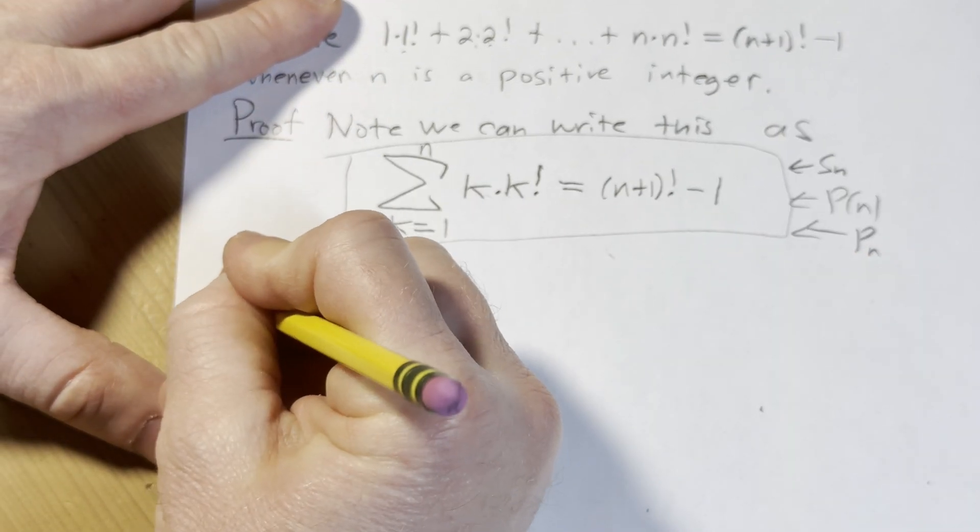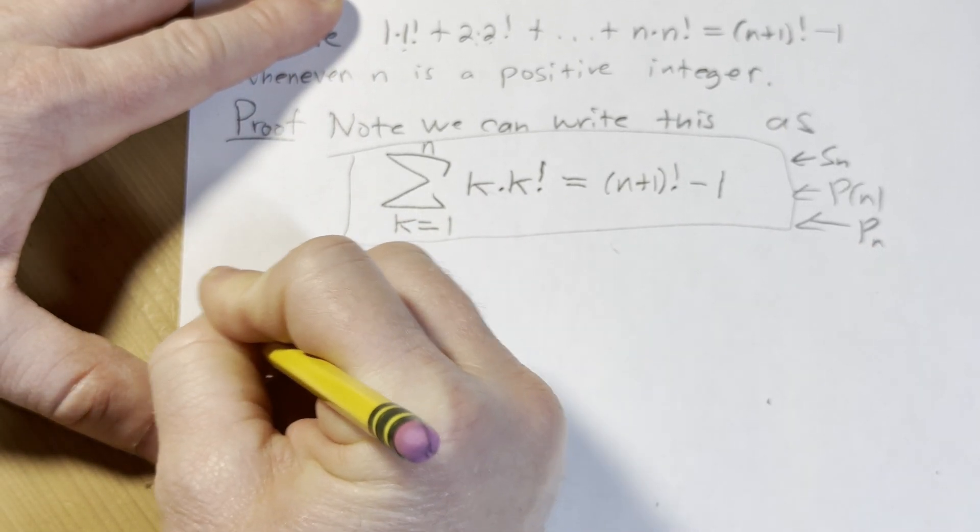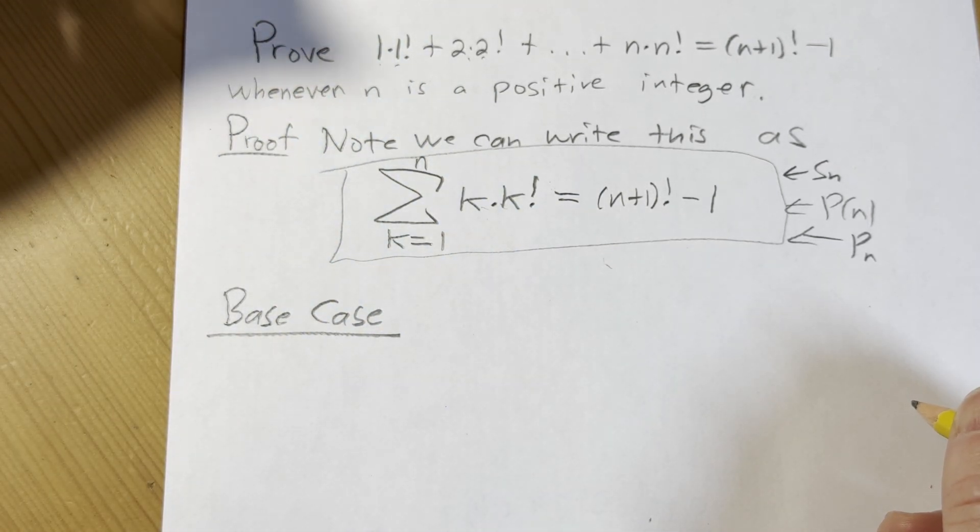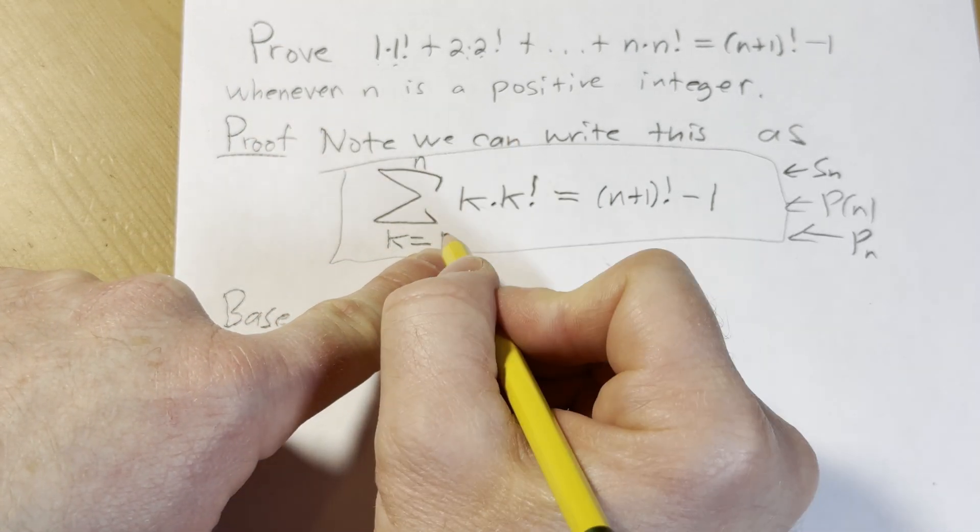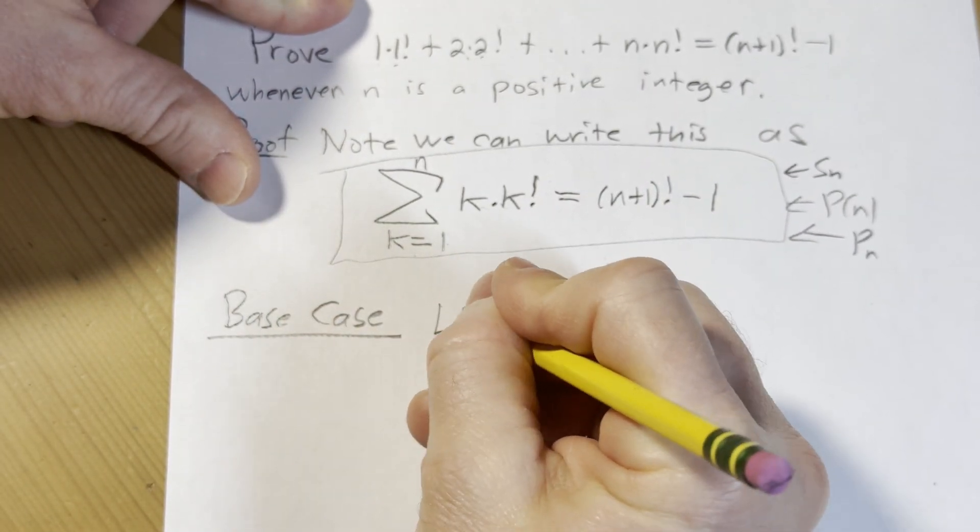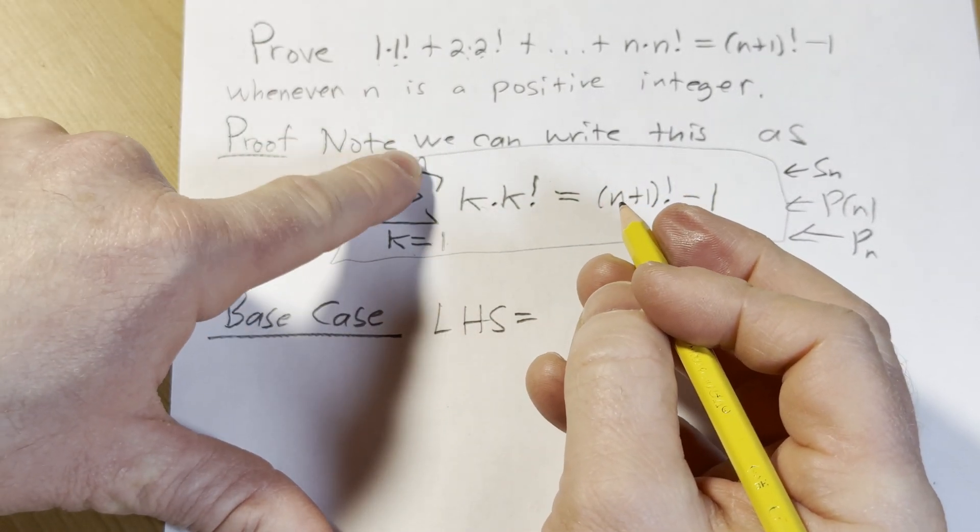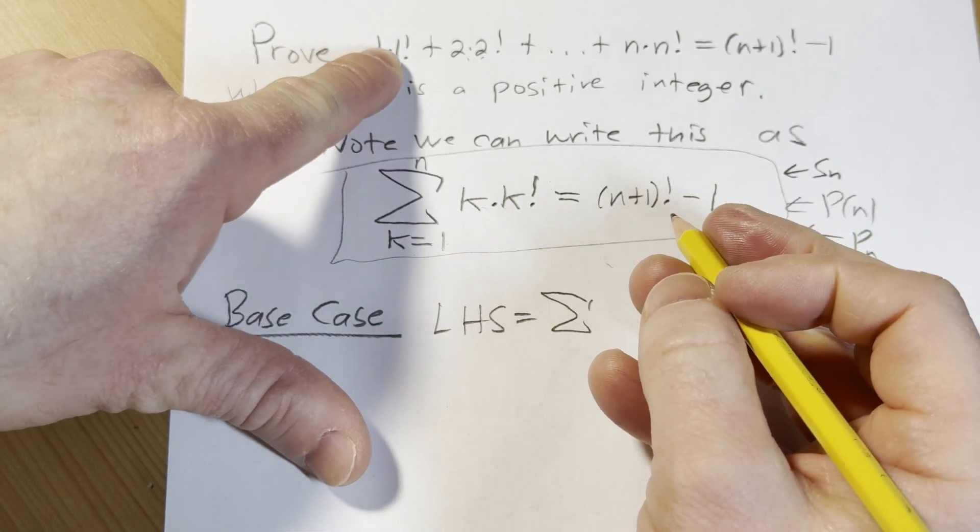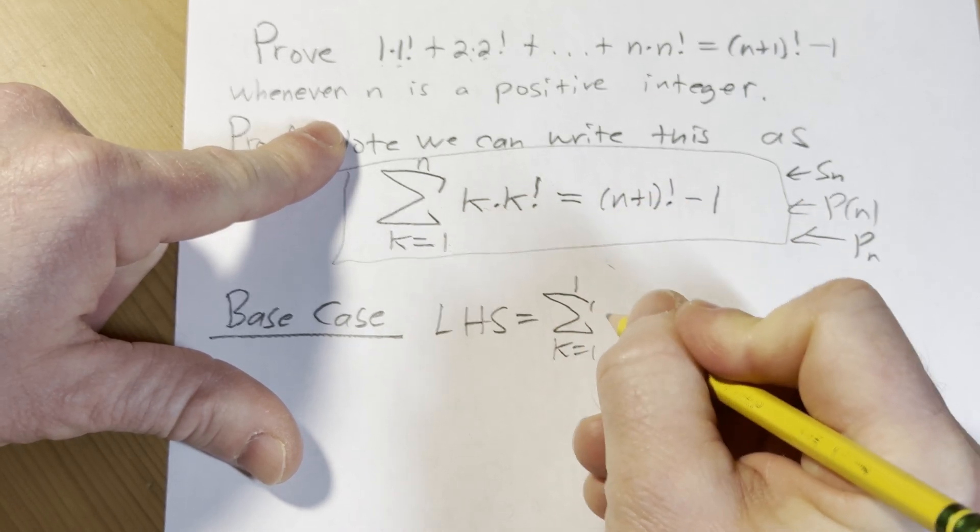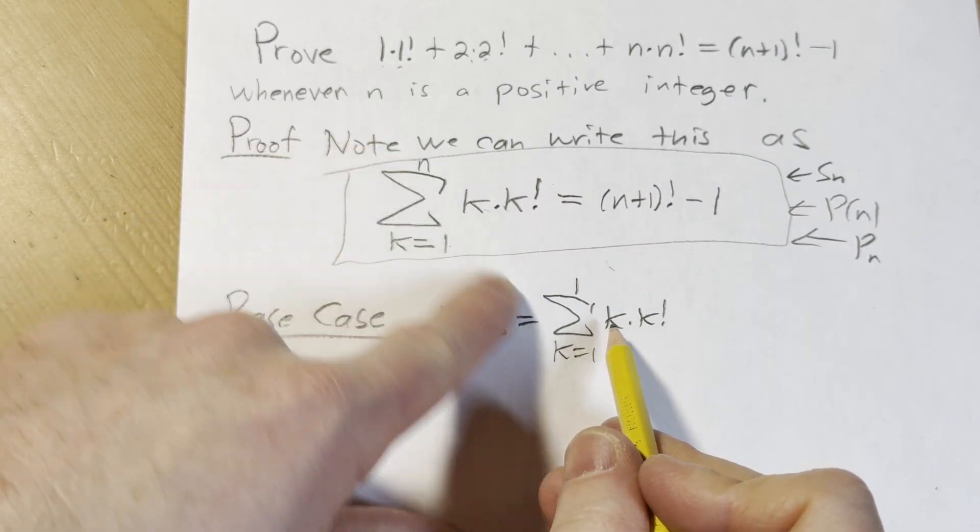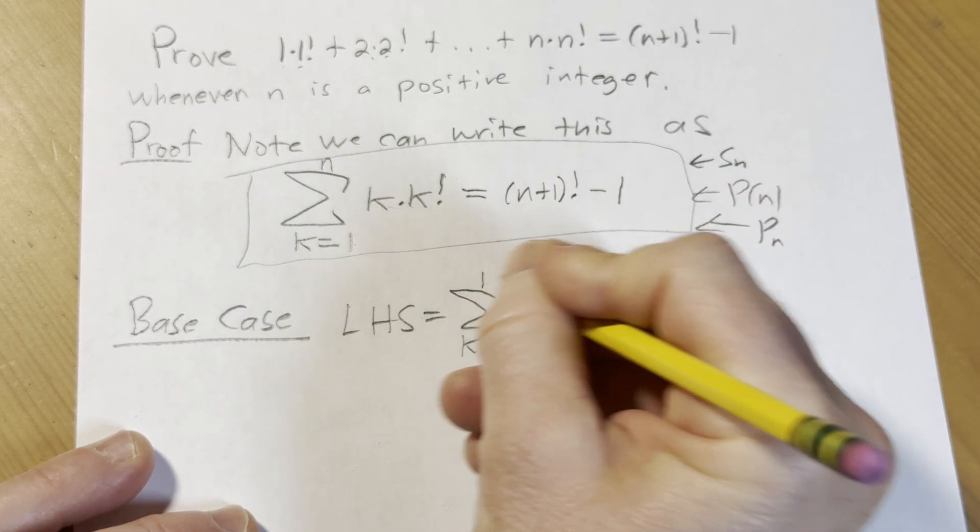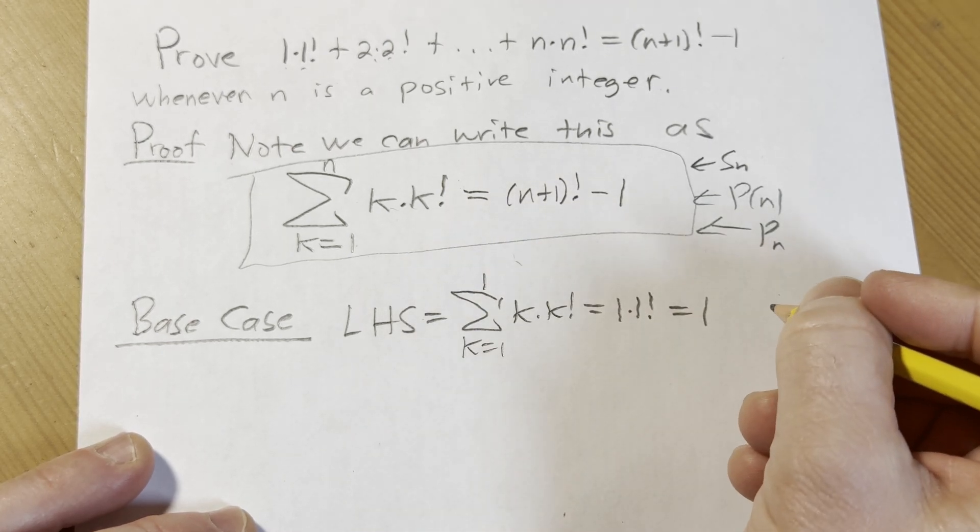Okay, so step one is the base case. In the base case, we have to prove it's true for the smallest number that we're interested in working with. In this case, the smallest positive integer is 1. So on the left-hand side, if we plug in 1 for n, we're just going to get the first term. Right, so all I've done here is replace the n with 1, right, because we're working with the left-hand side, plug in 1, and then you stop at 1. 1 times 1 factorial is 1 times 1, which is 1.